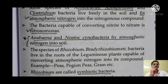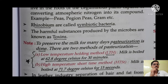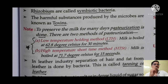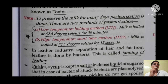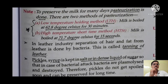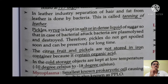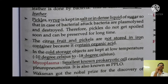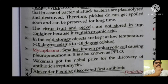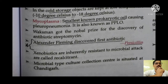Bacteria capable of converting nitrite into nitrate are called Nitrosomonas. Anabaena and Nostoc are cyanobacteria that fix atmospheric nitrogen into the soil. Rhizobium are called symbiotic bacteria. Harmful substances produced by microbes are called toxins. Pasteurization of milk uses two methods: LTH — milk is boiled at 62.8°C for 30 minutes; and HTST (high temperature short time) — milk is boiled at 71.7°C for 15 seconds. In the leather industry, separation of hair and fat from leather is done by bacteria — this process is called tanning.